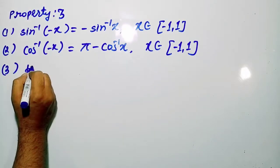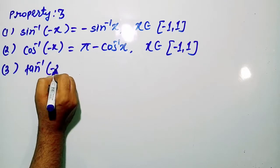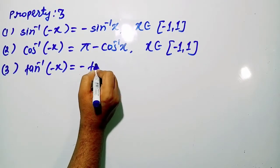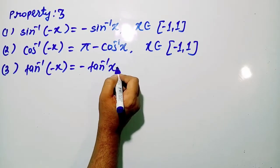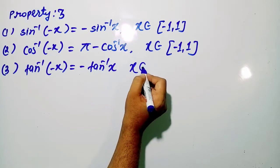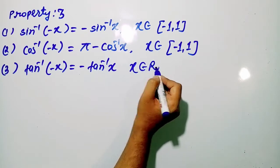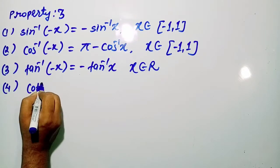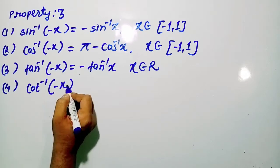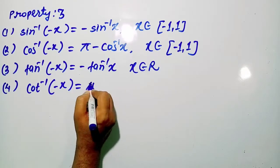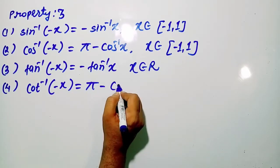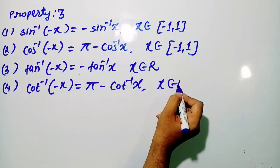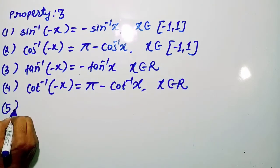Third, tan⁻¹(−x) = −tan⁻¹ x, where x belongs to real numbers. Fourth, cot⁻¹(−x) = π − cot⁻¹ x, where x belongs to real numbers.